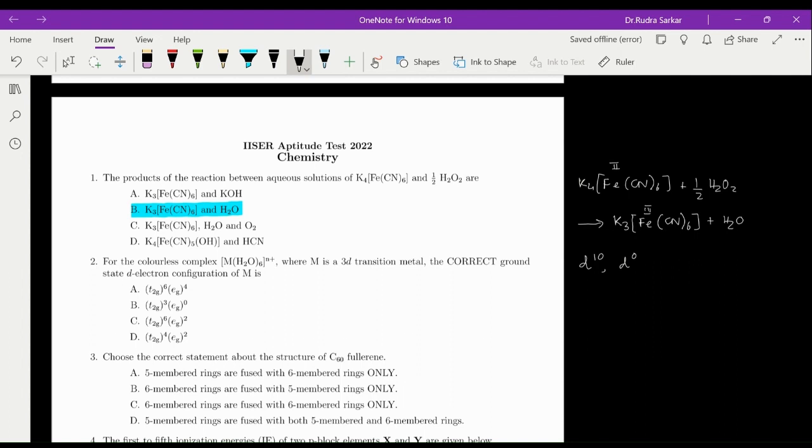Now for an octahedral field, if we arrange the electrons, the arrangement for D10 will be T2G6, EG4. So over here, looking at these options, you can see obviously this is going to be a D10 electronic configuration and the correct option is going to be option number A.